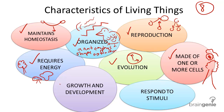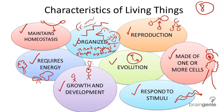Seven, all organisms must grow and develop, meaning that to be defined as a living thing, you must be able to get bigger, and as you do, you develop stronger abilities. For example, as an insect grows, it may develop the ability to fly. And finally, the last characteristic of life is that all organisms respond to stimuli, meaning all organisms react to things inside and outside the body, such as when a snake chases a mouse because of its need for food, and the mouse runs away to survive the snake.